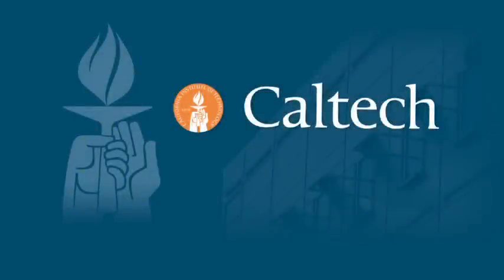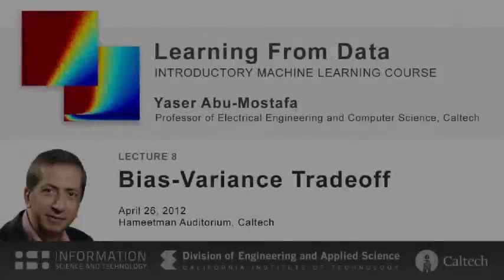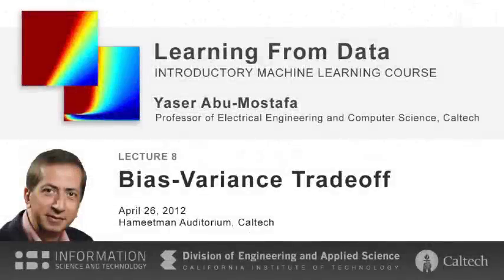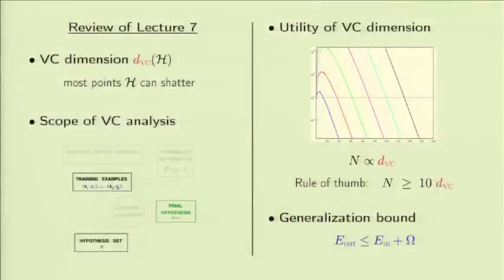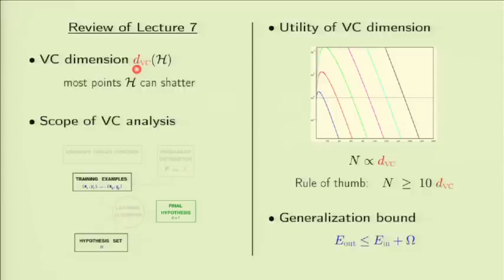The following program is brought to you by Caltech. Welcome back. Last time, we finished the VC analysis, and that took us three full lectures. The end result was the definition of the VC dimension of a hypothesis set — defined as the most points that the hypothesis set can shatter. We used the VC dimension in establishing that learning is feasible, and in estimating the example resources needed in order to learn.